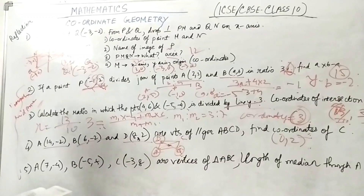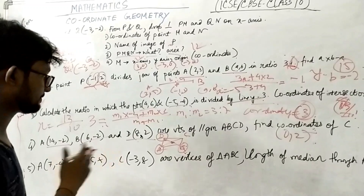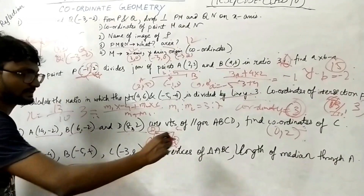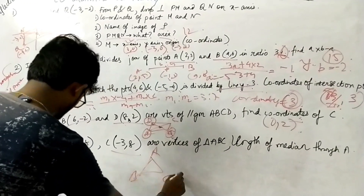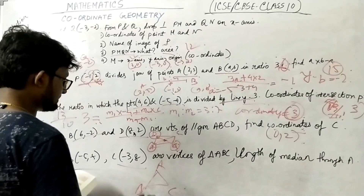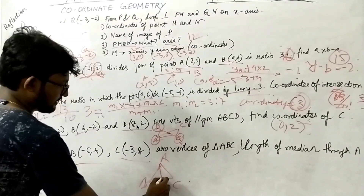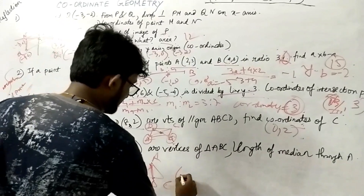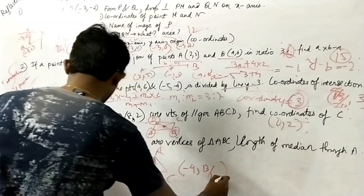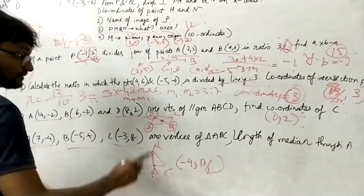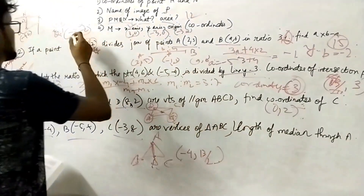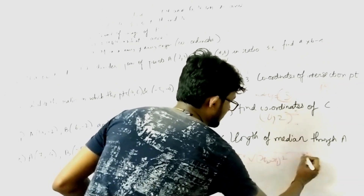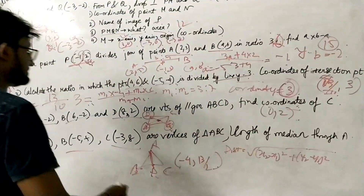Fifth numerical: A, B, C are vertices of a triangle; find the median through A and its length. The centroid formula is ((x1+x2+x3)/3, (y1+y2+y3)/3). The midpoint D of side BC is found using the midpoint theorem; D comes out as (-4, 13/2). Then the length of median AD is found using the distance formula: √((x2-x1)² + (y2-y1)²), where A and D are known points.